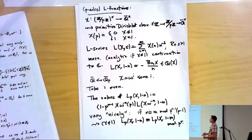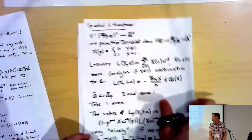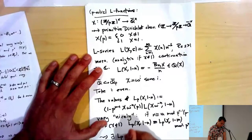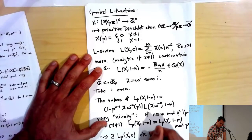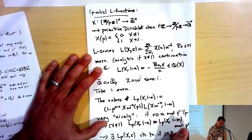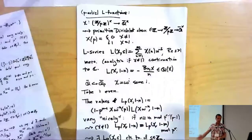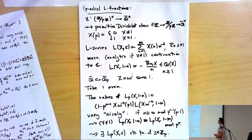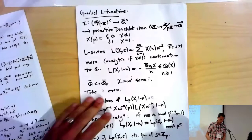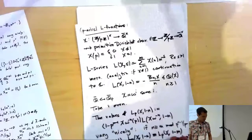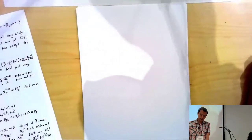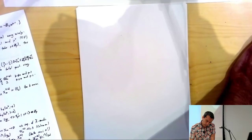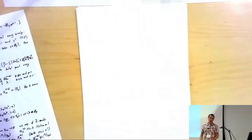From these congruences one concludes there exists a well-defined P-adic analytic continuous function interpolating these values at positive integers. This is called the Kubota-Leopoldt P-adic L-function.